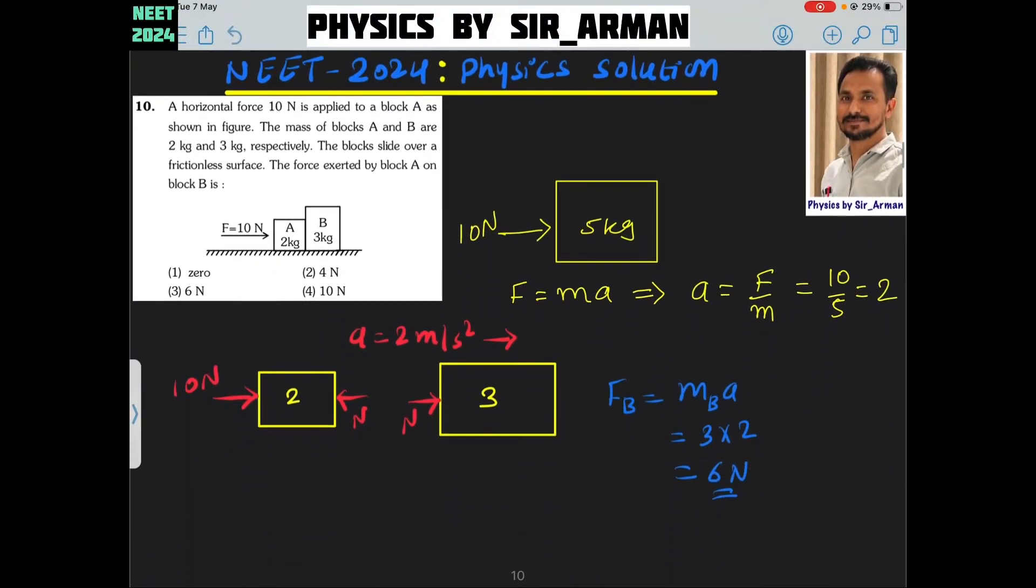Question number 10. A horizontal force of 10 Newton is applied to block A as shown in the figure. The mass of blocks A and B are 2 kg and 3 kg respectively. The blocks slide over a frictionless surface. Find the force exerted by block A on block B.